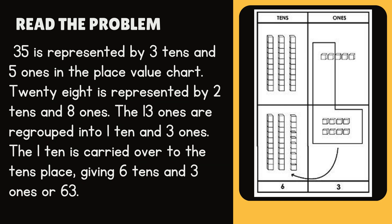35 is represented by 3 tens and 5 ones in the place value chart. 28 is represented by 2 tens and 8 ones. The 13 ones are regrouped into 1 ten and 3 ones. The 1 ten is carried over to the tens place, giving 6 tens and 3 ones, or 63.